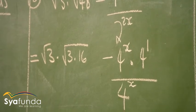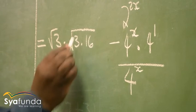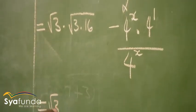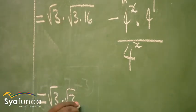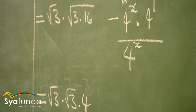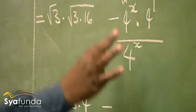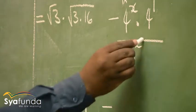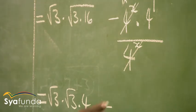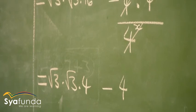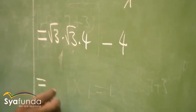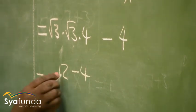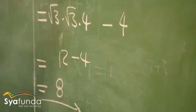Let's take this thing further. This becomes: square root of 3 times square root of 16 — the square root of 16 is 4 — so I've got root 3, which is out of the square root as 4. That is 4 square root of 3. Then minus, dealing with the other part: 4 to the power minus 1, which is 4. What is square root of 3 times square root of 3? It is 3. Then 3 times 4 is 12. So we've got 12 minus 4. What is 12 minus 4? It is 8. So that is how we evaluate this expression to give us 8.